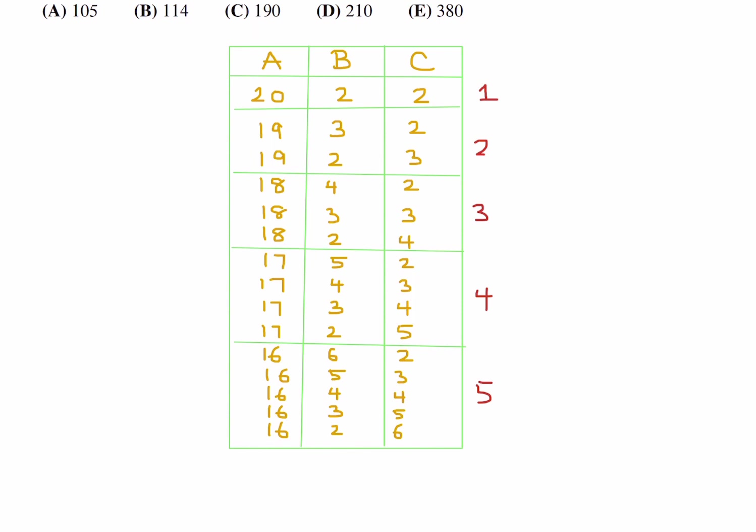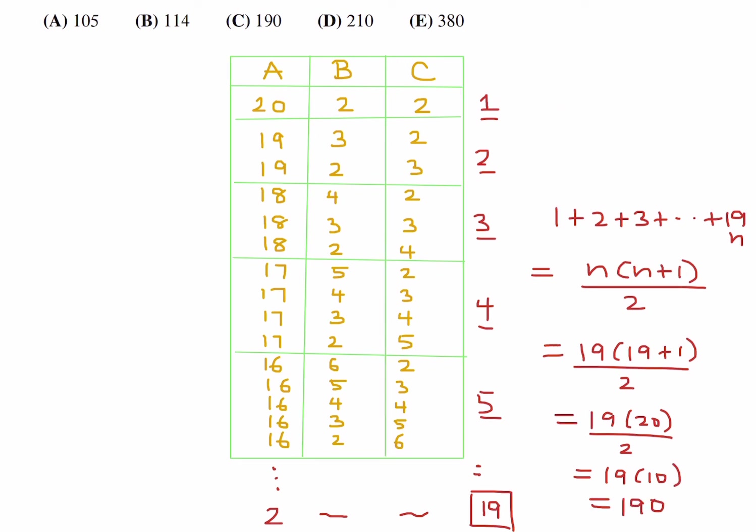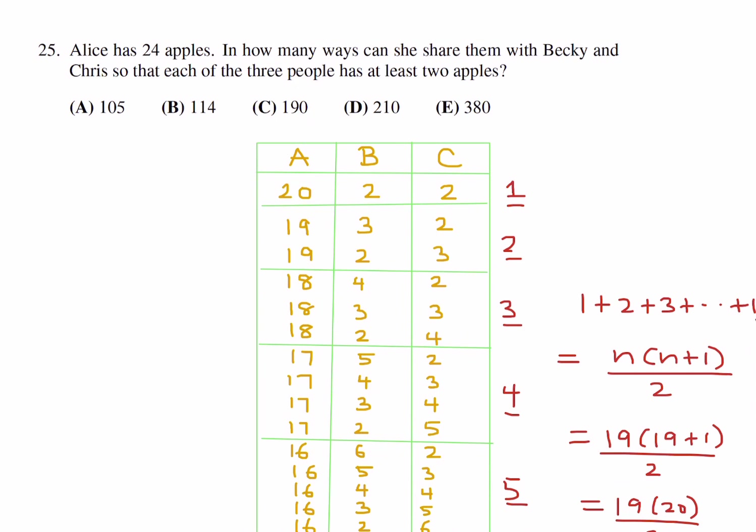Now this, of course, will keep going, until you get the very end, which will be a minimum of 2. Because remember, at least two have to go to each person. And there will be a whole bunch of scenarios for B and C. But the number here will be 19. Because if you notice, this number and that number always add up to 21. So therefore, that is 19. So really, what you're doing is you're adding 1 plus 2 plus 3 plus 4 plus 5 all the way to 19. And some of you may know that formula, n times n plus 1 divided by 2, where n in this case is 19. So it would be 19 times 19 plus 1 divided by 2. That's 19 times 20 divided by 2, which is 19 times 10, which is 190. So that is the quick method to do number 25. And that would mean number 25, the answer is C.